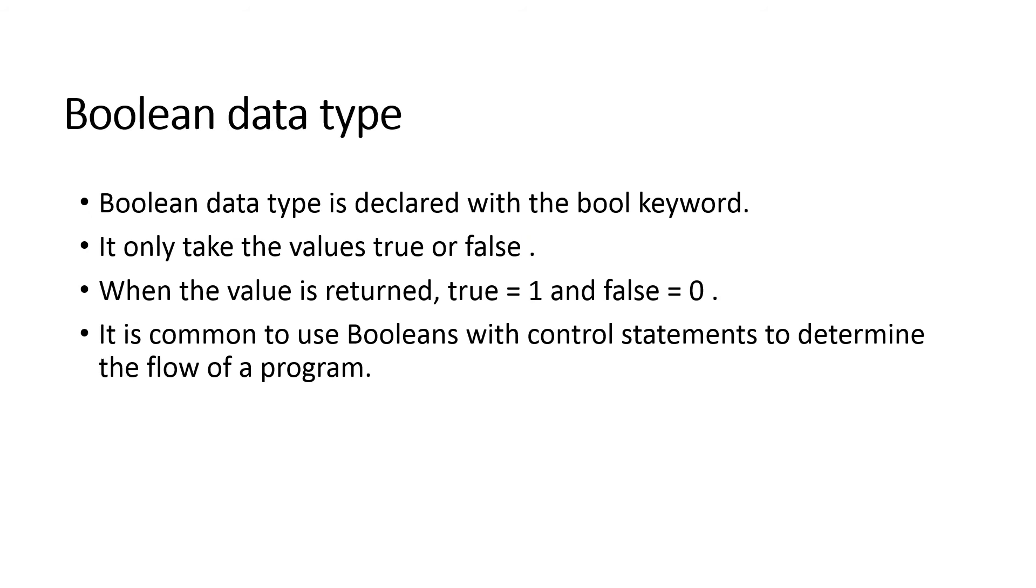Next is another data type, boolean. Boolean is represented using the keyword bool. It says something is true or false. If it is true, it will return the value 1, else it will return 0.